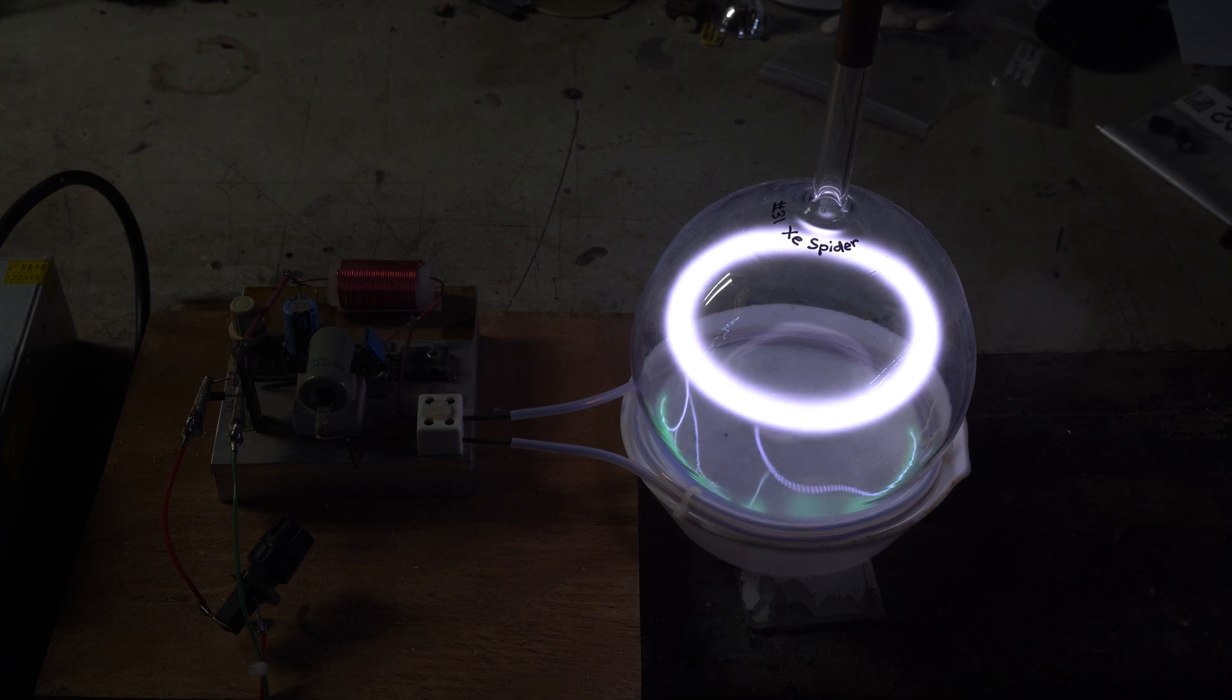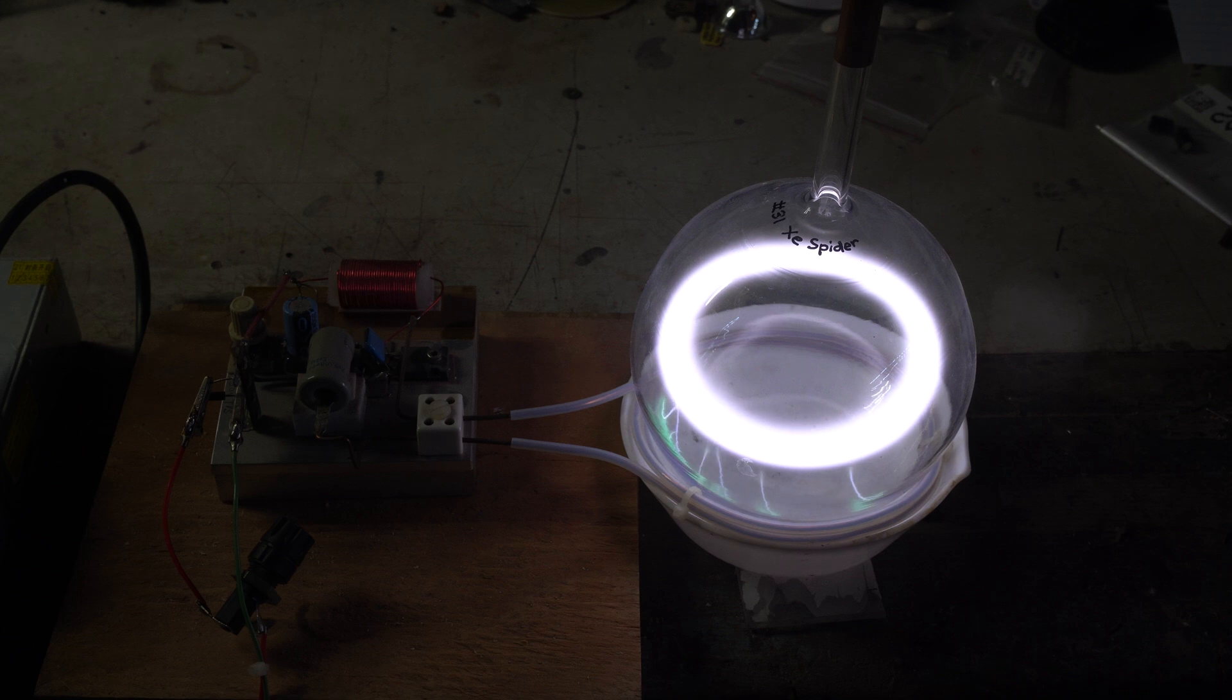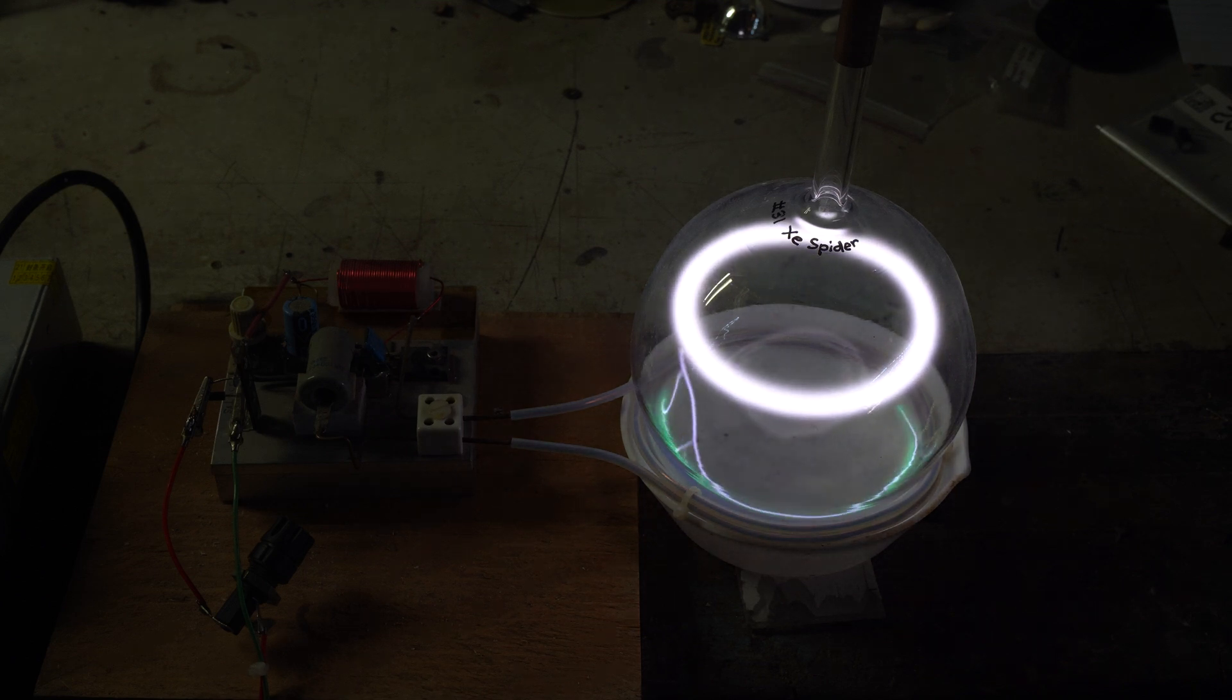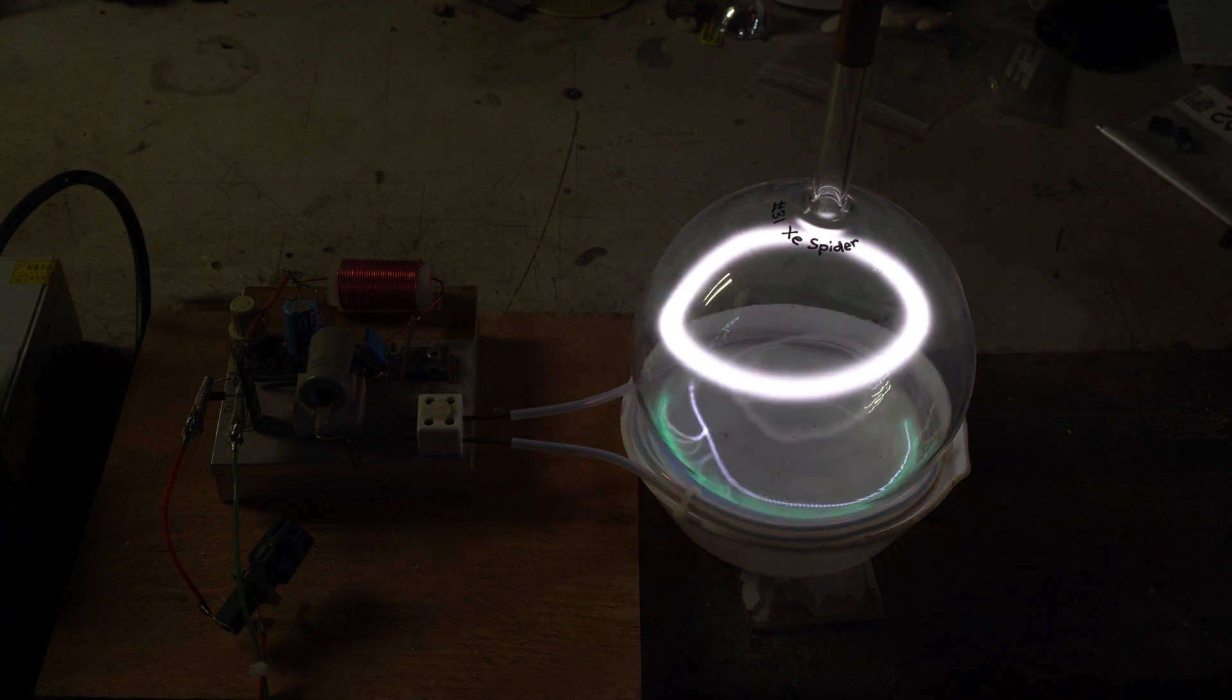You can see here as I start to raise the voltage, the plasma becomes more stable and closer to the coil. If I lower it, at some point I lose it. That's at about 27 volts.